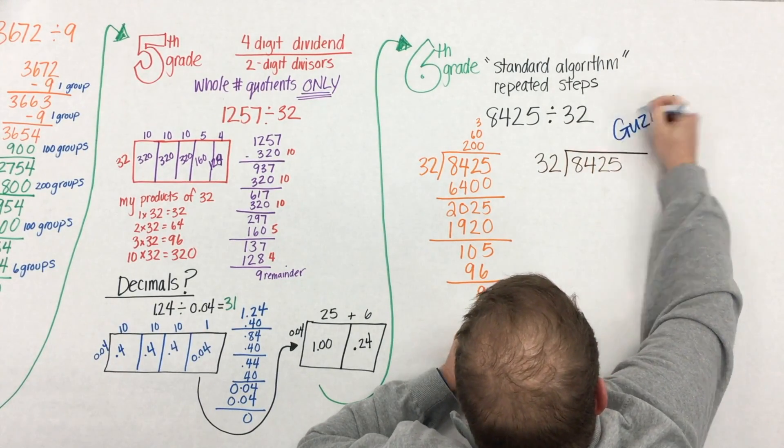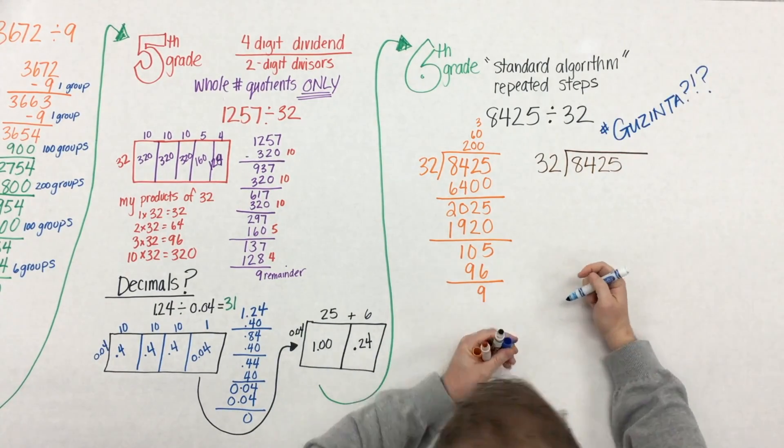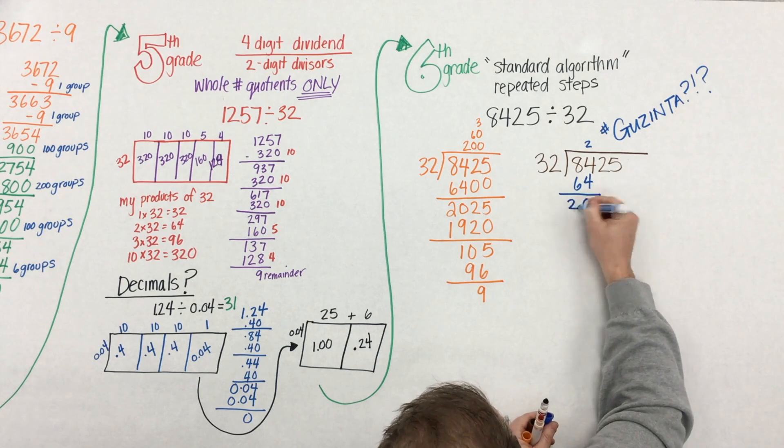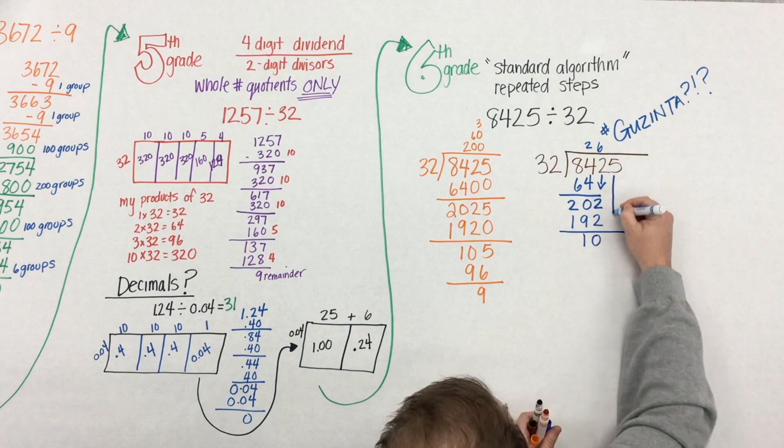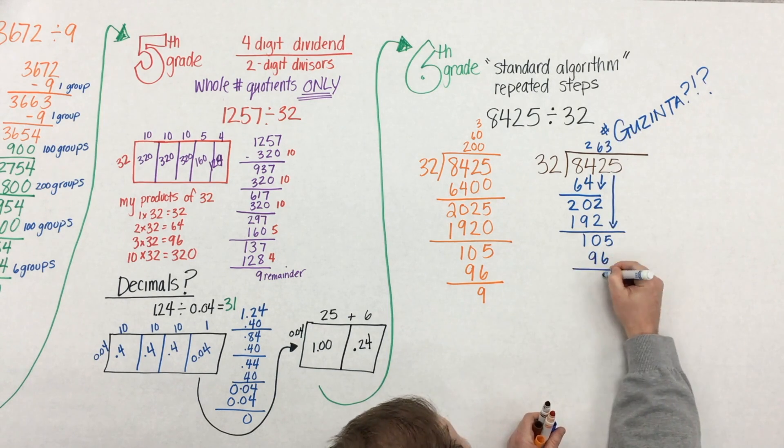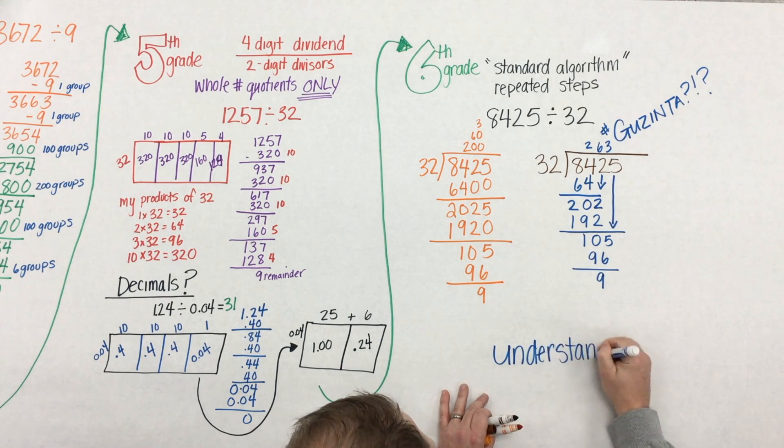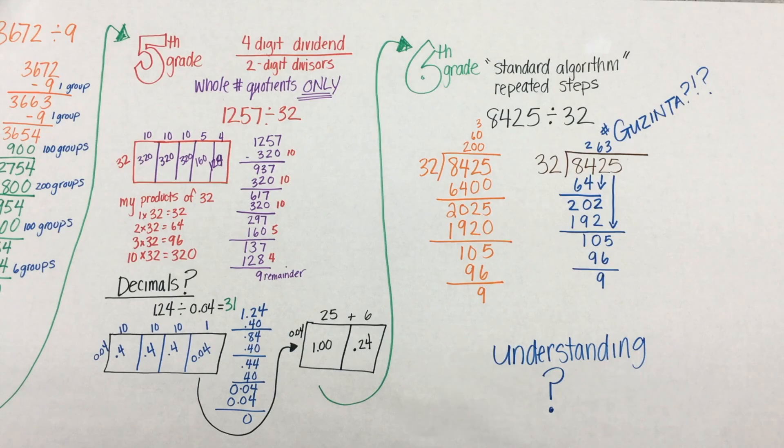Let's look what it looks like with the standard algorithm. Well, 32 doesn't go into 8, but 32 gazenta. Gazenta? What does that mean? And here we have the traditional algorithm, which many of us are familiar with. But you see how there is a connection between the two. Which one has understanding?